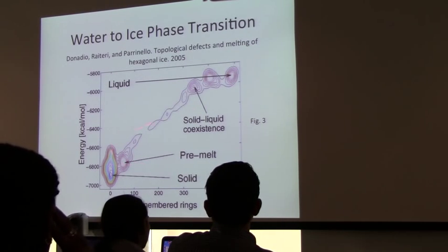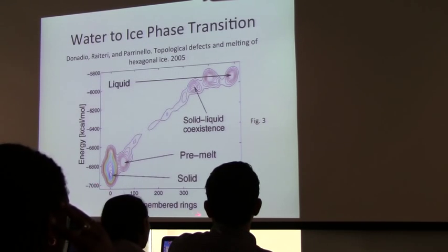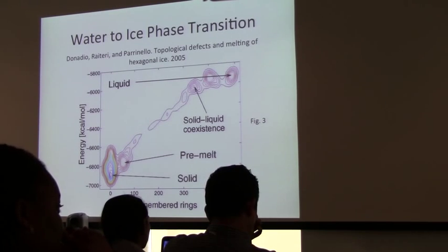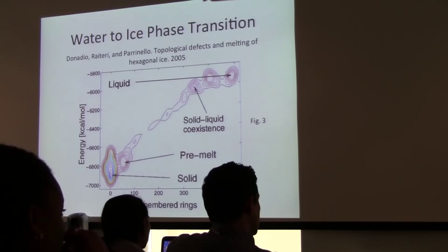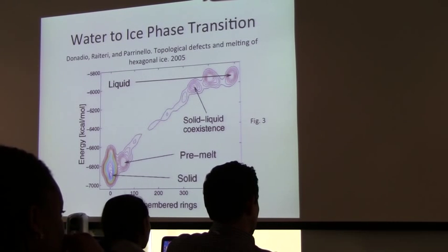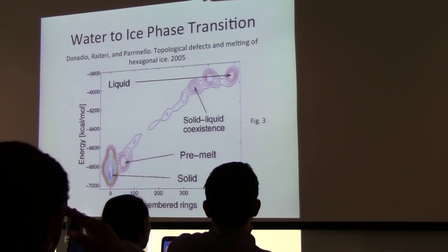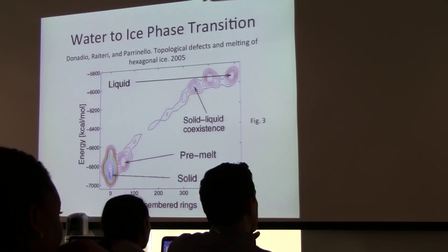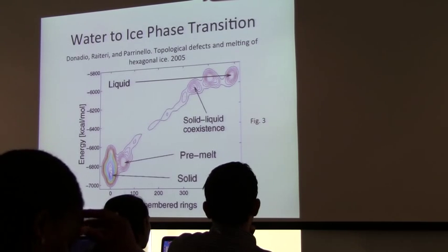The microscopic order parameter they examined is the number of five-membered rings. Hexagonal ice has many six-membered rings — six oxygens bonded in a honeycomb throughout the ice. When you start forming defects, you get five- and seven-membered rings. You can count either; they chose five-membered rings and tried to drive the creation of those topological defects.